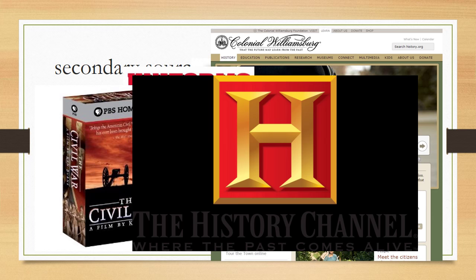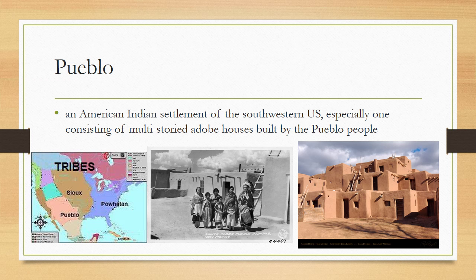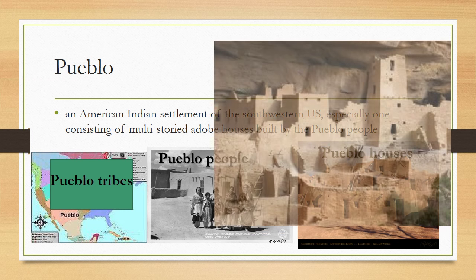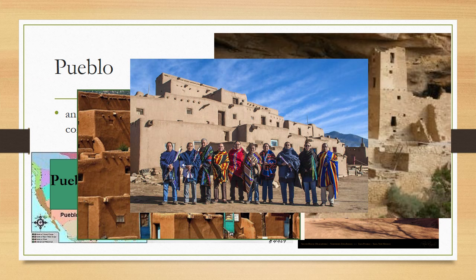Pueblo is your next term, and it can represent two different ideas that are related in meaning. Pueblo is an American Indian settlement of the southwestern United States, especially one that consisted of multi-storied adobe houses built by the Pueblo people. So Pueblo is a term that can be both a descriptive word but also used as a noun or a place — Pueblo houses, Pueblo people, and the Pueblo tribes. Pueblo can describe the people and the tribes, but also the clay-shaped homes. These are Pueblo homes. These are Pueblo people.